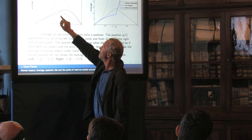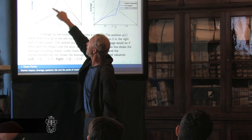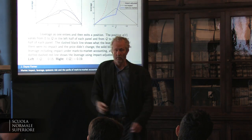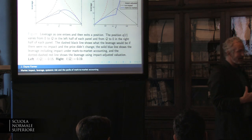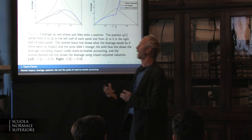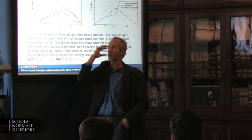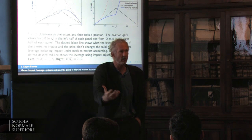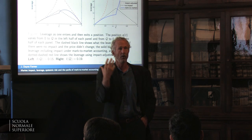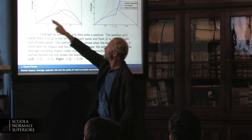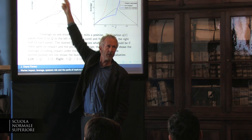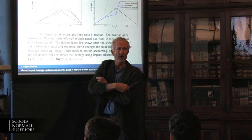It's even worse than that, because if you look at our impact-adjusted formula — now taking into account that you're thinking ahead about what will happen when you have to sell back out — when you sell back out, you're going to drive the prices down. So the impact-adjusted leverage goes shooting up. It is much higher than the other scenarios.